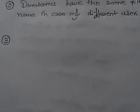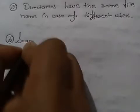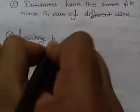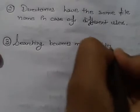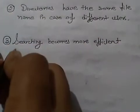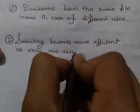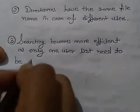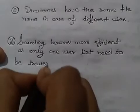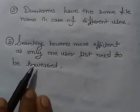Third point is, in this, the searching becomes more efficient as only one user list needs to be traversed. It means only one user is traversed, another will be given another time space.